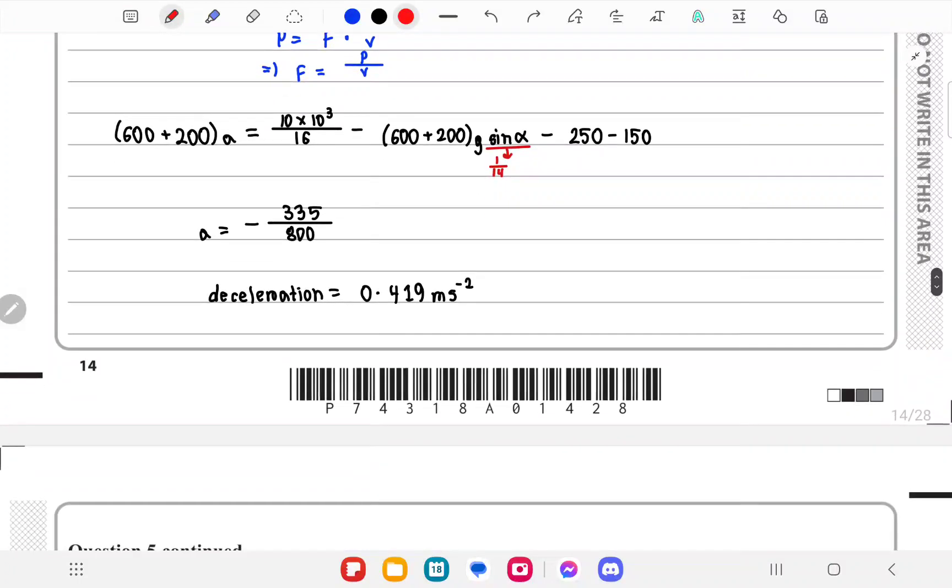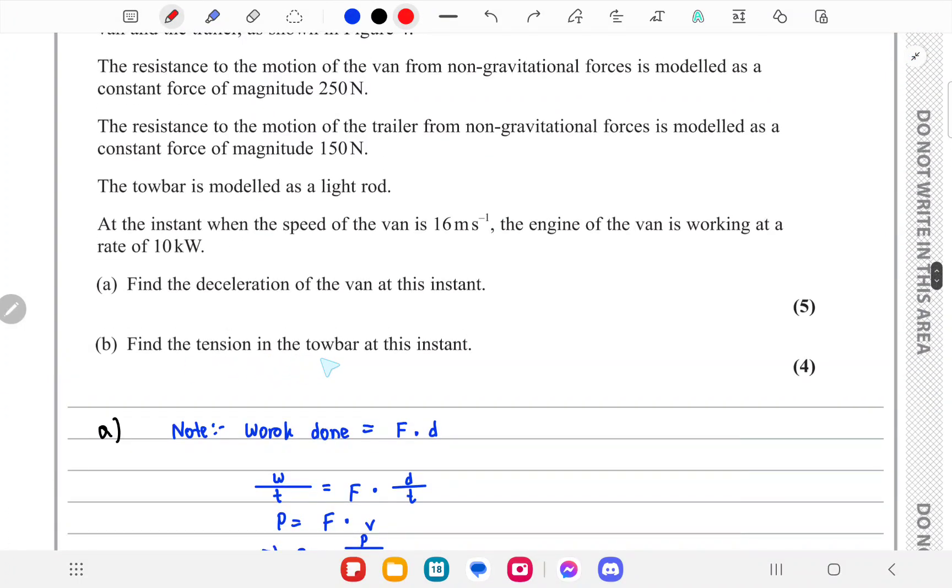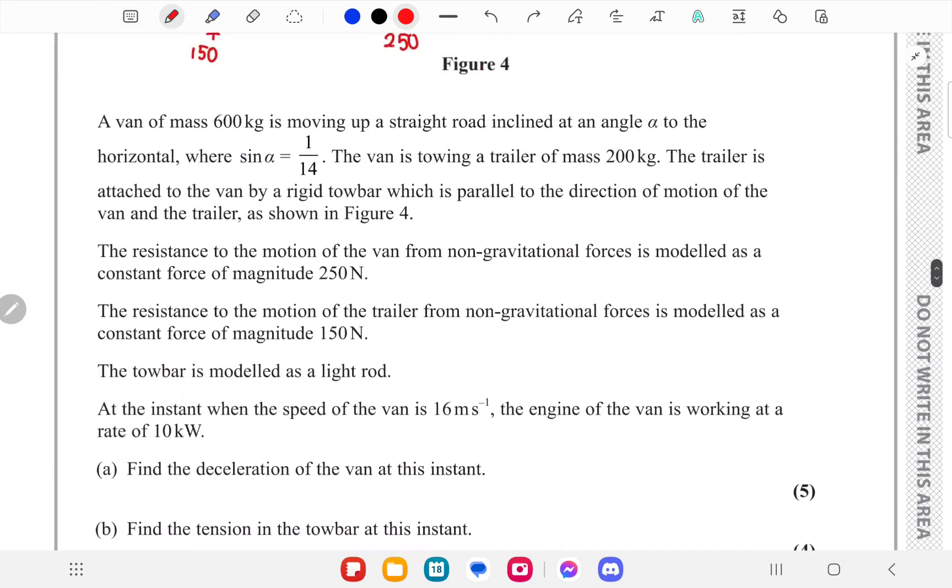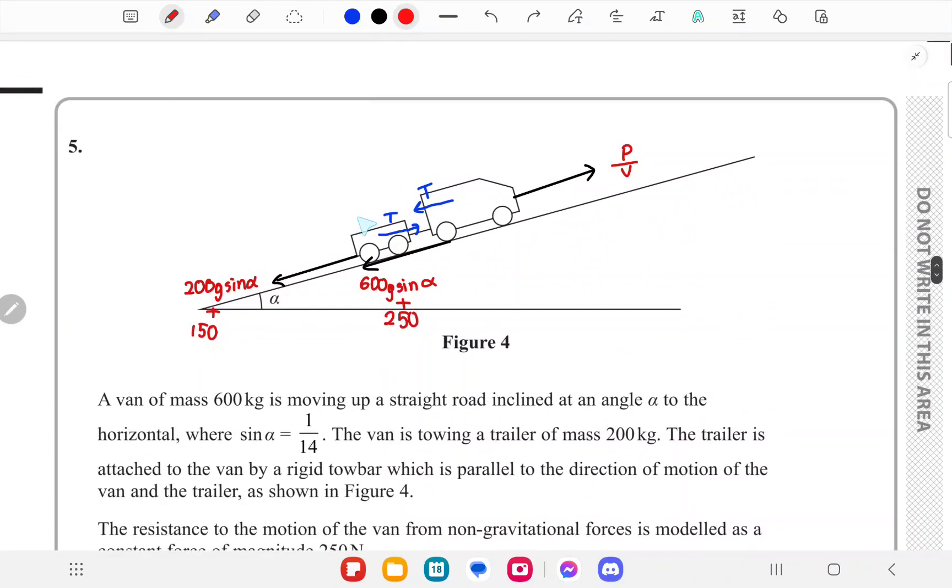In part B, we have to find the tension in the towbar at this instant. Now we'll have to consider it as separate particles. I'd say it's easier to consider the trailer.